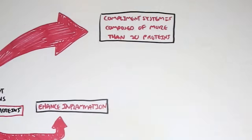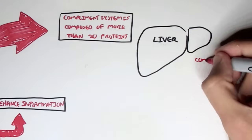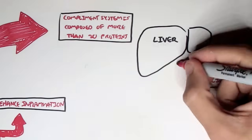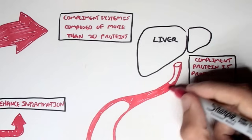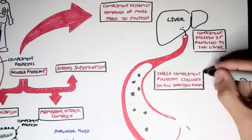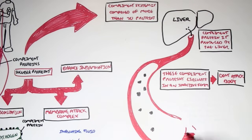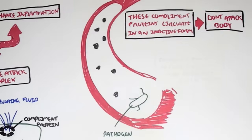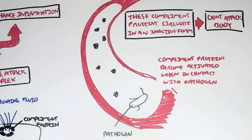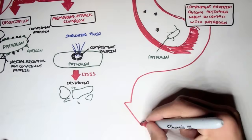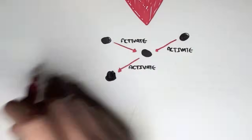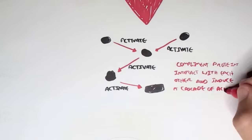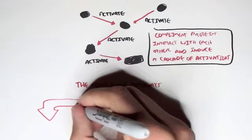The complement system is composed of more than 30 types of proteins. Complement proteins are produced by the liver and travel through the bloodstream in an inactive form, so they don't attack the body. But when they come across a pathogen, they become activated and will then opsonise, create a membrane attack complex on the pathogen, and enhance inflammation. The complement proteins don't get activated easily because they interact with each other and induce a cascade of activation — a complement protein activating another complement protein.